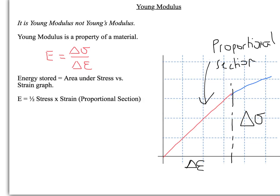Different materials will have different Young moduli, and you can use this when picking a material for a particular application. Just like for a force-extension graph, you can use the stress-strain graph to calculate the energy stored — it's the area under the graph. In the proportional section, that's half stress times strain. If you're into the non-proportional section, you use the square counting method once again.